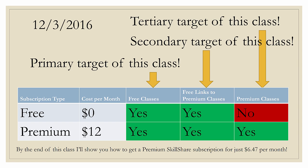Free is $0 per month. Premium can be as much as $12 per month. Both free and premium get access to all of the free classes on Skillshare, and I'm going to show you how to find those by the end of this lesson. They also get access to premium classes that have free links to them — instructors can create free links to their premium classes to build up the student body. The area where free cannot access classes is premium classes that do not have free links; to access those, you have to be a premium member.